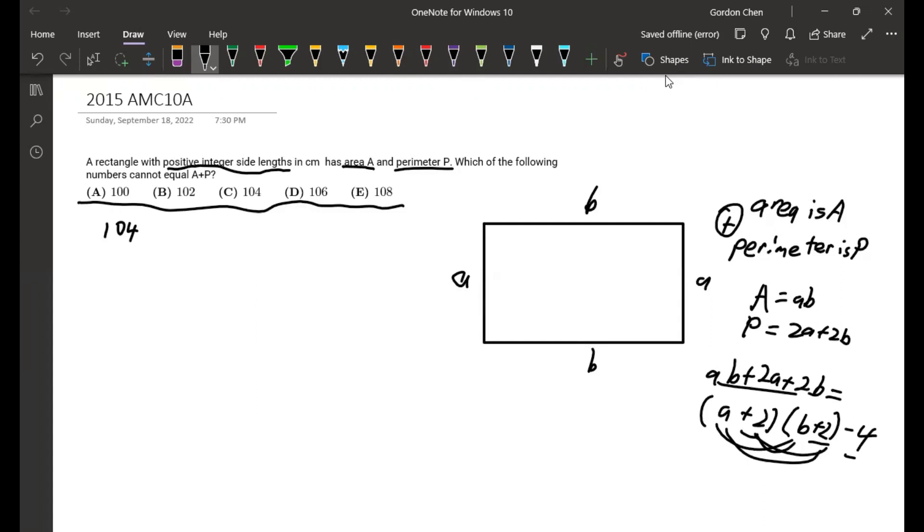So if we divide this one by 2, 106 divided by 2 is 53. We can kind of just stop here because 53 is a prime, so our answer would be 102.